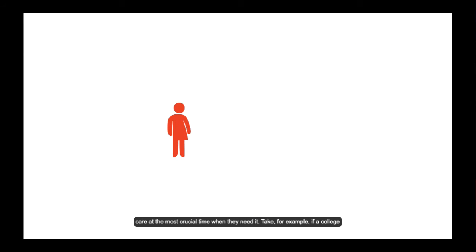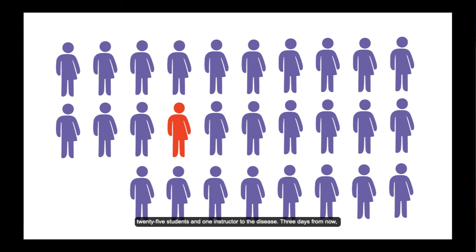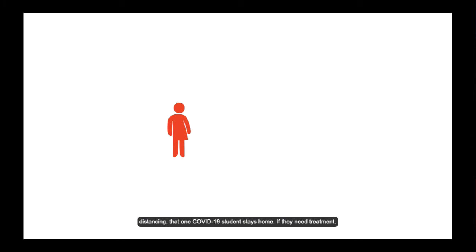Take for example, if a college student who gets COVID-19 goes to class. That person has now exposed 25 students and one instructor to the disease. Three days from now, 26 people are sick. As you can see, that can potentially overload our hospital. With social distancing, that one COVID-19 student stays home. If they need treatment and go to the hospital, there's now only one person who needs treatment and not 26.